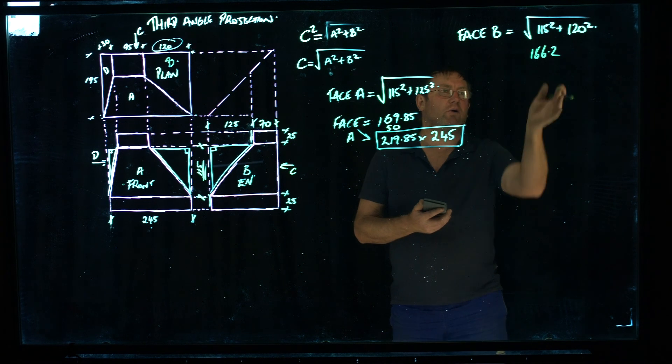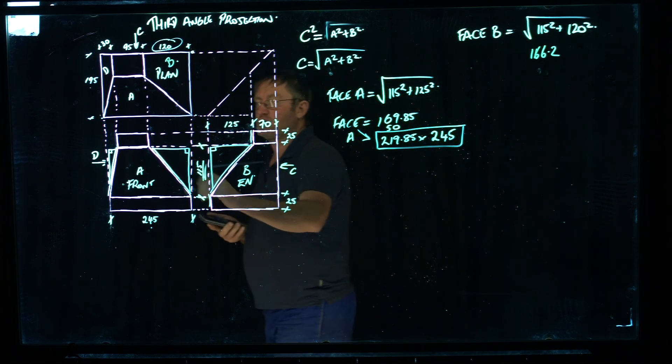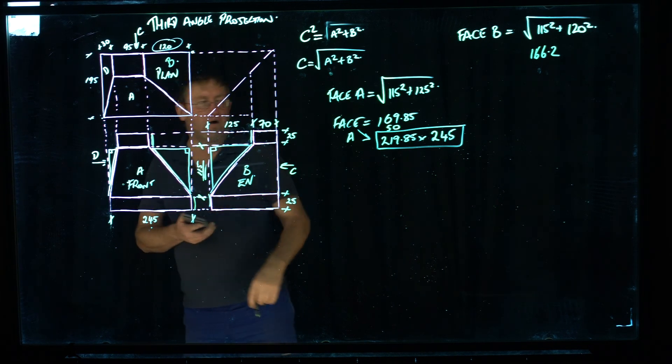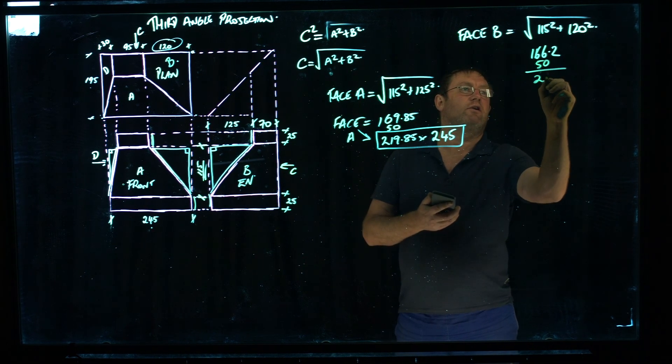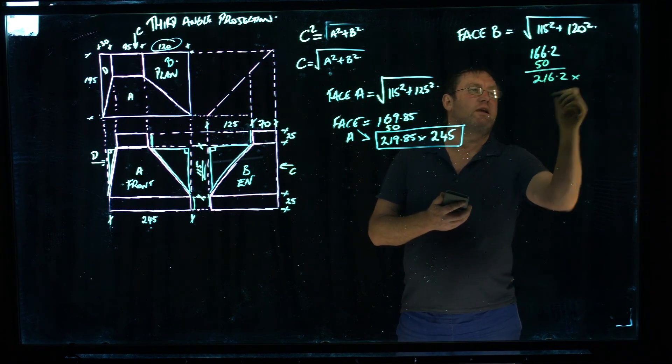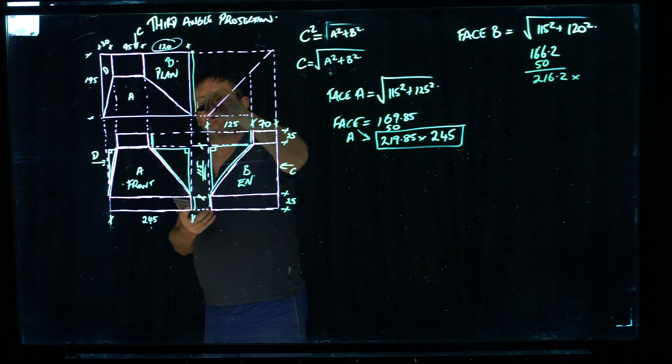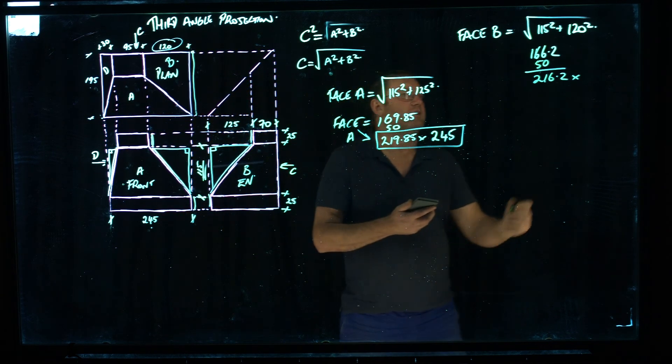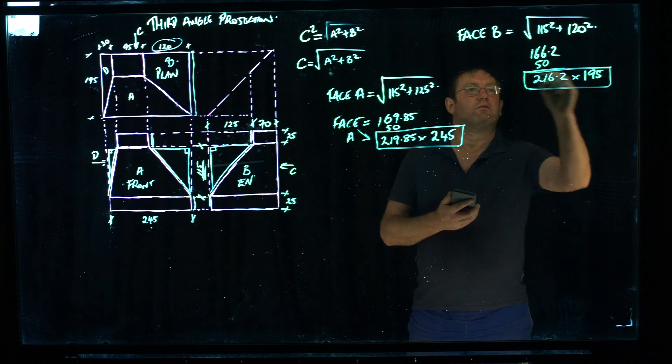Comes out at 166.2mm. Once again, I'll keep it accurate, but you can round that just basically back to 166. I have to add my straight of 25 and 25 on it. So once again, 50mm on that. We get 216.2mm. And the width of face B is this dimension across here, which is 195mm. So there's the cut size for face B.